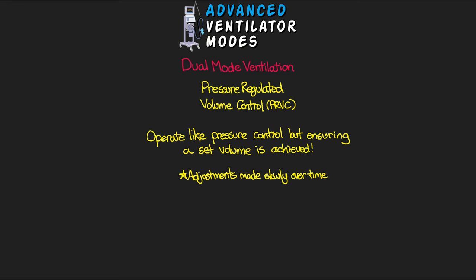The settings for PRVC look similar to volume control — frequency, FiO2, PEEP, and a target volume. This target volume is the goal rather than an explicit mandatory volume. When the patient is first started on this mode the vent gives an initial test breath to determine the patient's compliance. It then figures out a pressure to operate with, gives a pressure-controlled breath, observes the delivered volume, and gradually adjusts pressure up or down over the next few breaths until the targeted volume is achieved.